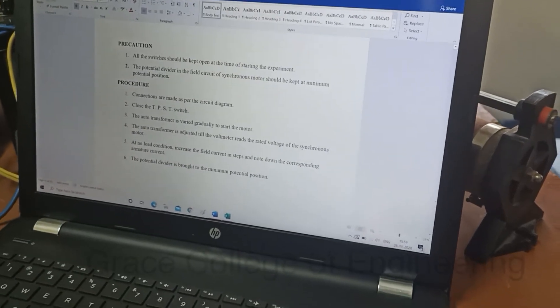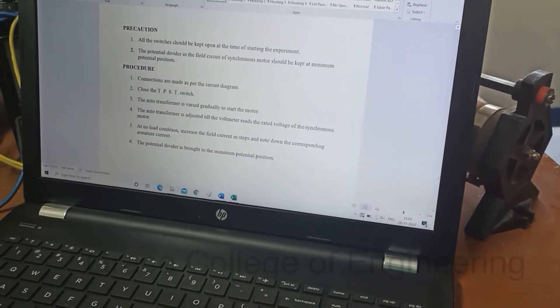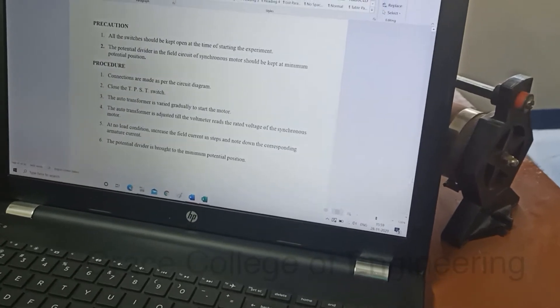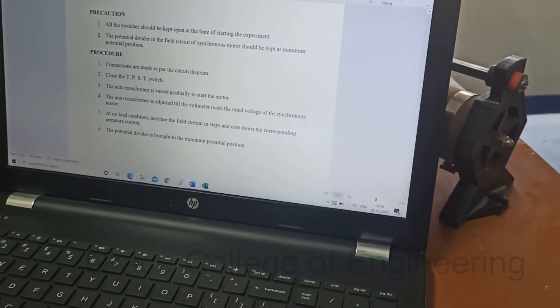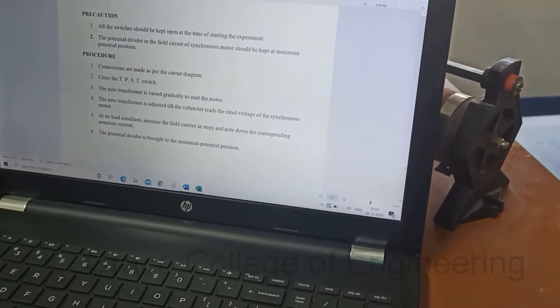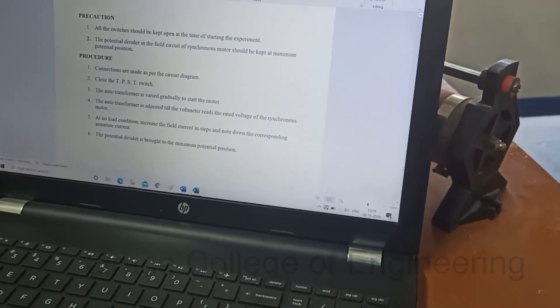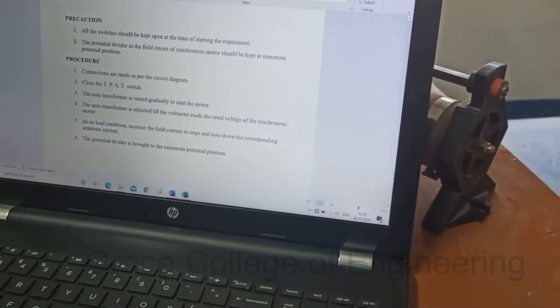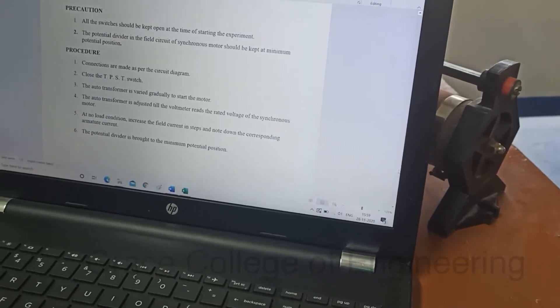The procedure is to connect the circuit as per the circuit diagram. Close the TPST switch, then auto transformer is varied gradually to start the motor. The auto transformer is adjusted till the voltmeter reads the rated voltage of the synchronous motor.